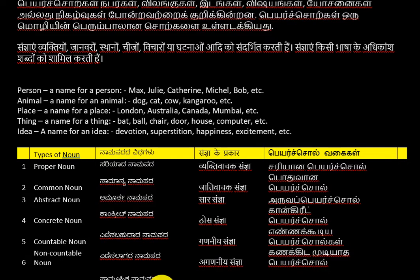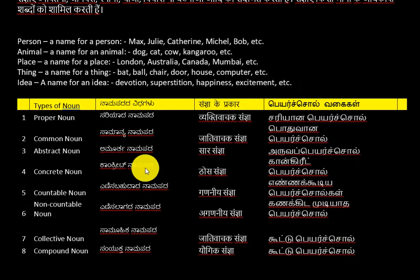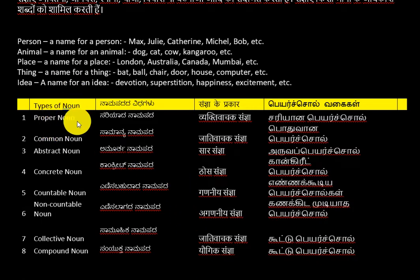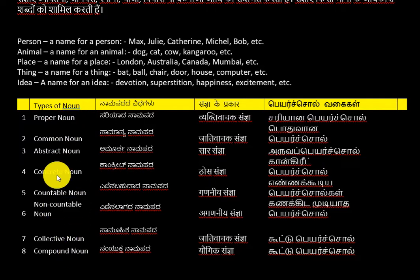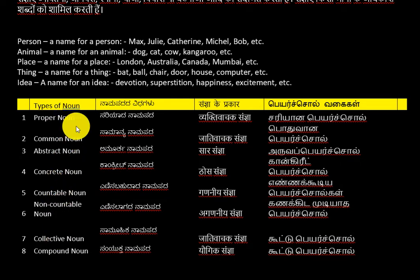For ideas or abstract concepts, words like devotion, superstition, happiness, and excitement are nouns. Today we are going to see certain types of nouns. We have eight types of nouns — it is not a separate part of speech, but a classification under the noun category itself.